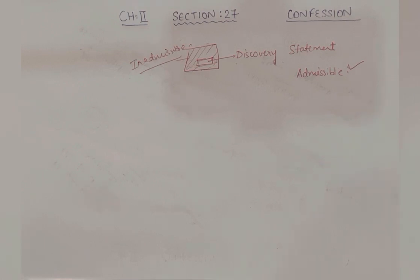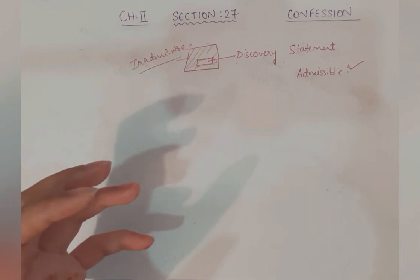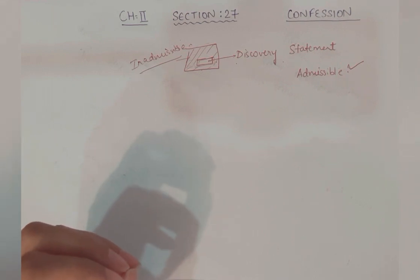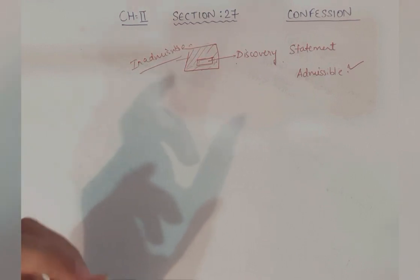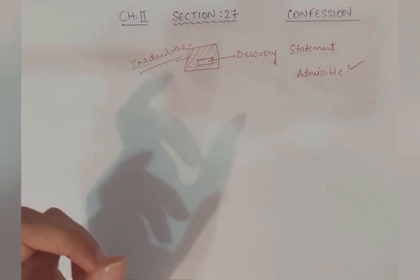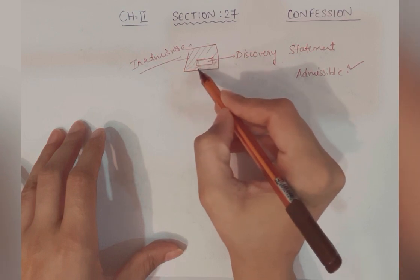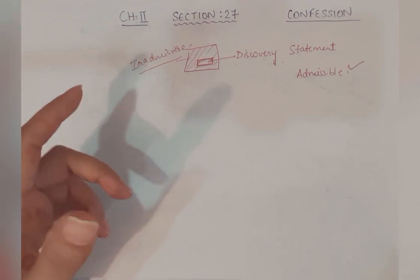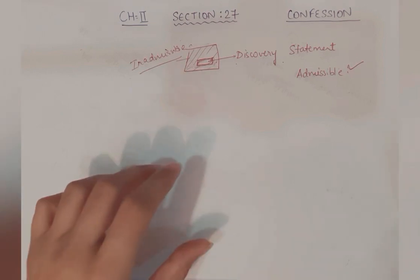Now you will see: accused in police custody gave information to police, and in consequence of that information a fact is found — they discovered it. And it is proved that this fact was discovered on the basis of information received from the accused. Only that much of information is acceptable — is admissible. This part relates to the discovery of fact. This is the discovery statement, and the rest is maybe confessional or non-confessional, so only that much of the statement distinctly will be relevant and admissible.